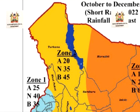Counties in northwestern Kenya — Turkana, West Pokot, and Samburu — are also expected to receive below-average rainfall. Parts of the highlands east of the Rift Valley, including Nyandarua, Nyeri, Kirinyaga, Murang'a, Kiambu, parts of Embu and Nairobi, as well as parts of southeastern Kenya including parts of Machakos and Kajiado counties, are similarly affected.